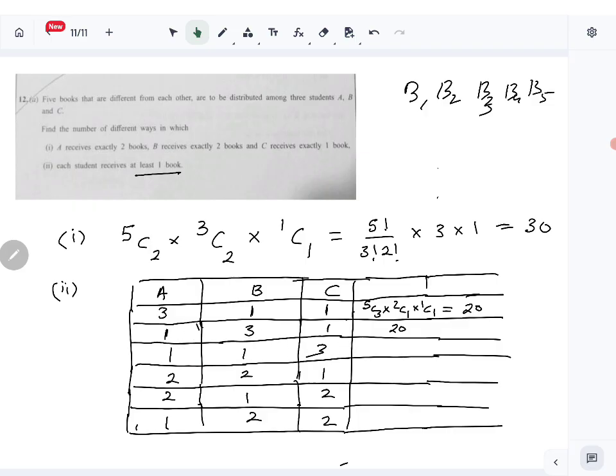If you want, you can do it like that: 5C1, 4C3, then 1C1, again 20. The next one will also be 20, same type: 5C1, 4C1, 3C3. Then the other three cases are all 30.